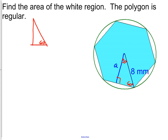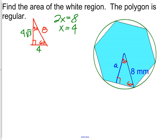In the 30-60-90 triangle, the side across from the 90° is the 2x side, so with the hypotenuse equal to 8, we get x = 4. The half-side at the bottom is also 4. The apothem is the side opposite the 60° angle, which equals x√3, so the apothem is 4√3.